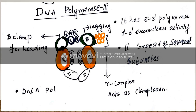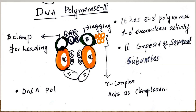DNA Polymerase III has 5' to 3' polymerase activity and 3' to 5' exonuclease activity. That covers the details of DNA Polymerase III and the DNA replication initiation process in prokaryotes.